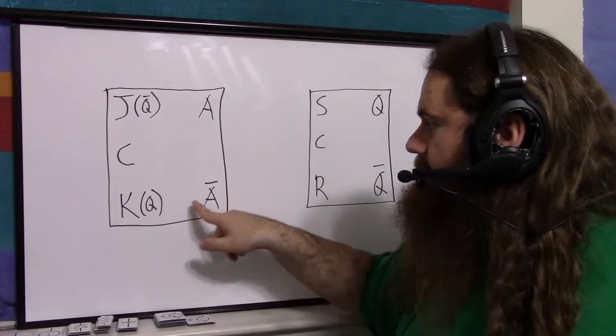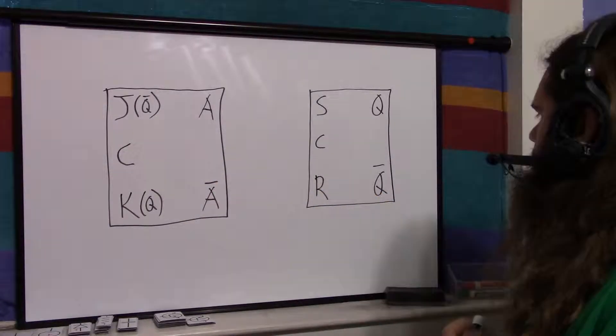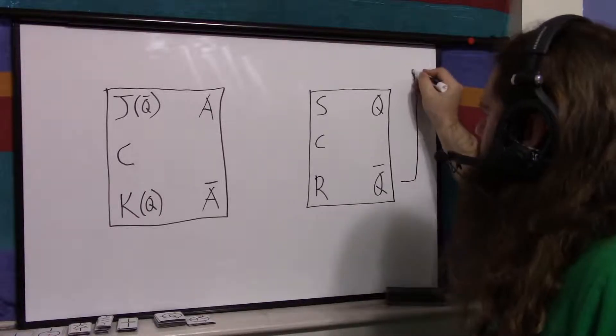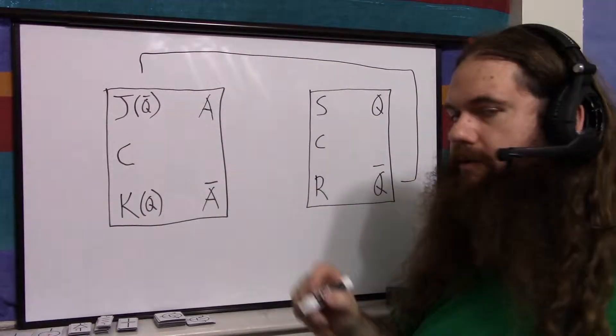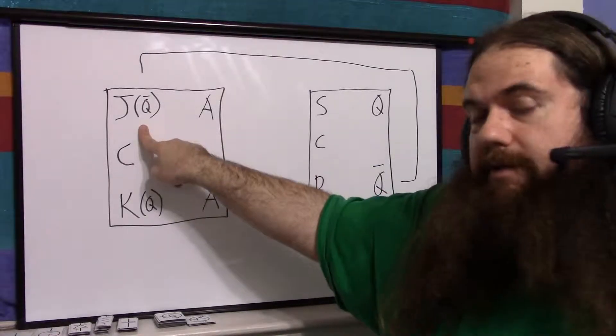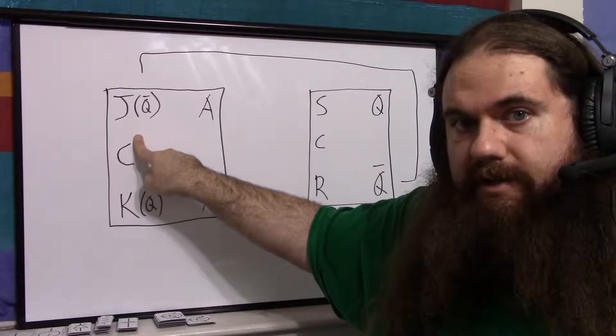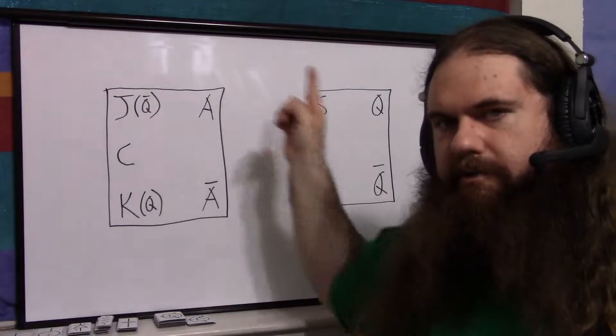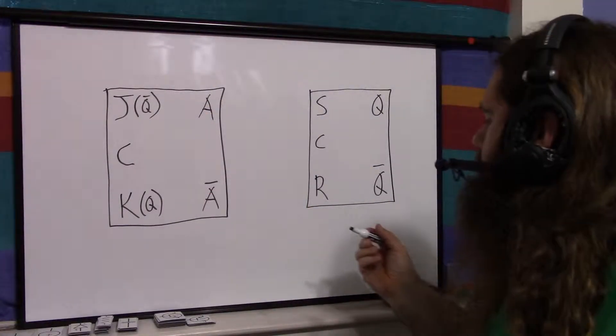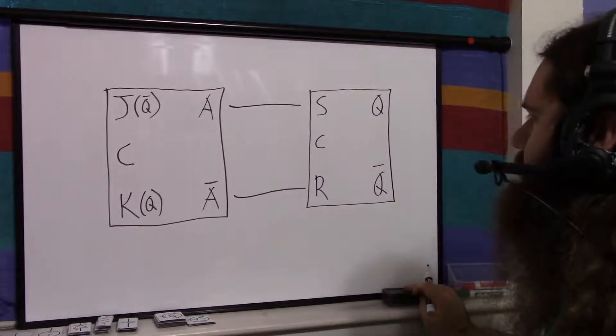Instead of being connected to its own A not here, it's connected to this one over here. As if we had a wire, and of course you'd actually have a wire using transistors. It's the SR flip-flop's Q not that is going to the J connection, the J NAND gate, in the JK flip-flop. So the feedback stretches between the two. We're going to use A and not A as S and R.